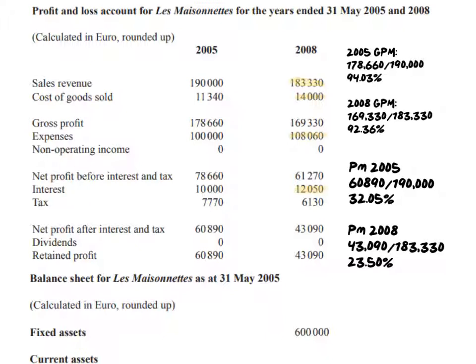For the profit margin, you can see that in 2008, expenses increased and interest increased, though tax was reduced. Using net profit after interest and tax, in 2005 the profit margin was 32.05%, but in 2008 it fell more significantly than the gross profit margin did, down to 23.50%. To summarise the formulas: gross profit divided by sales revenue times 100 gives the gross profit margin; net profit divided by sales revenue times 100 gives the profit margin.